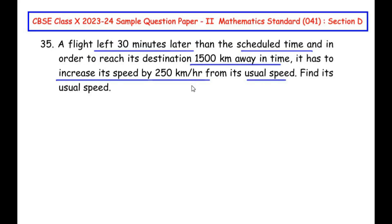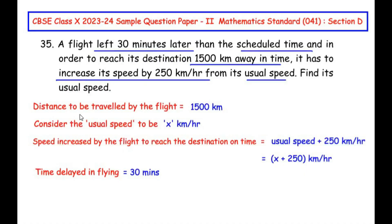So we have to find out what is its original speed. So let us try to write down the given details first. Starting with the distance to be traveled by the flight is given as 1500 kilometers. Then let us consider that the usual speed or the regular speed of the flight is x kilometers per hour. Now, it increases the speed to reach the destination on time. So we write it as usual speed plus 250 kilometers per hour. But the usual speed we considered as x. So the speed increased by the flight is x plus 250 kilometers per hour. And the time delayed in flying is 30 minutes.